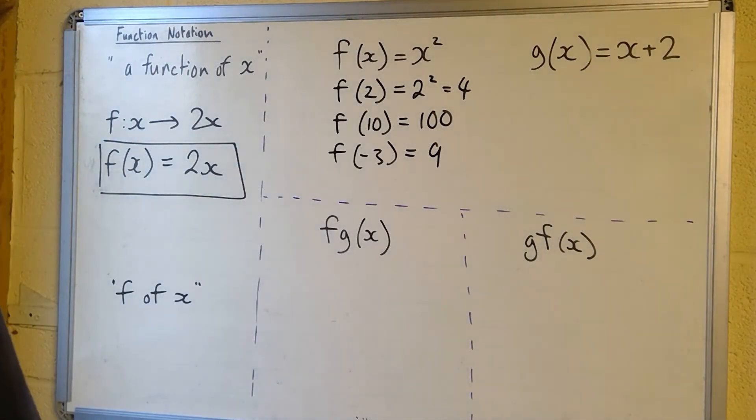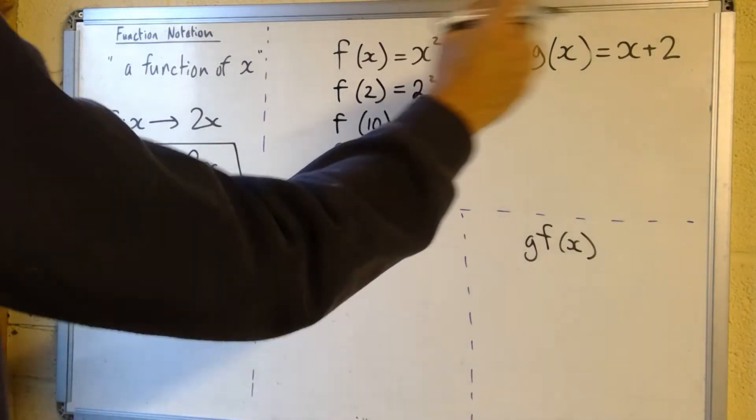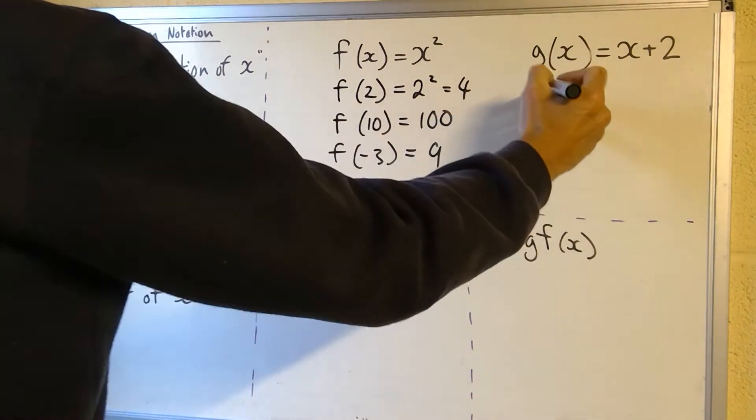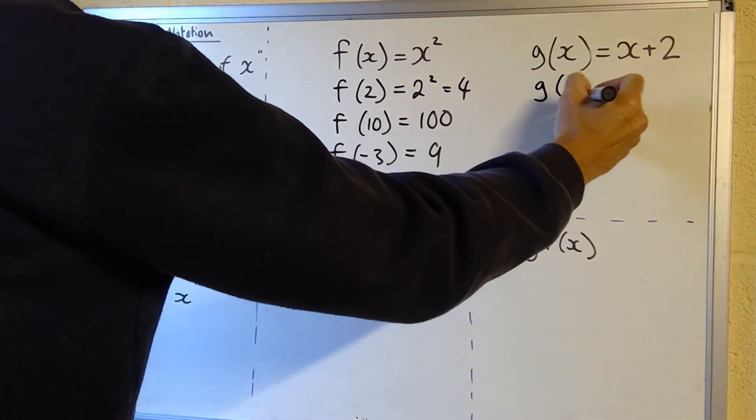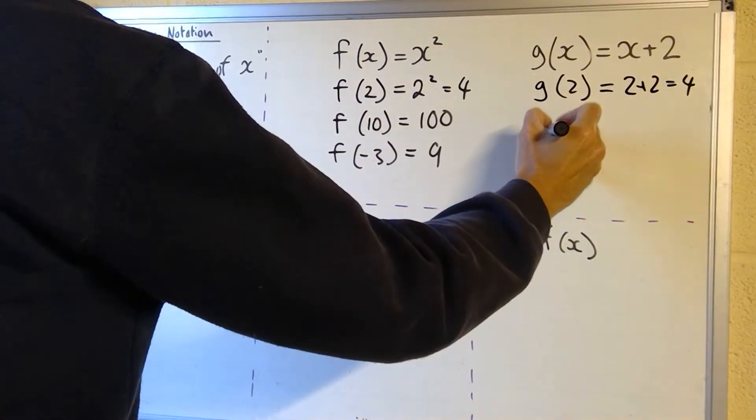So it's just a notation really for substitution. I can do the same with this example here. So g of x equals x plus 2, really simple numbers. So g of 2 would equal 2 plus 2 which is of course 4.